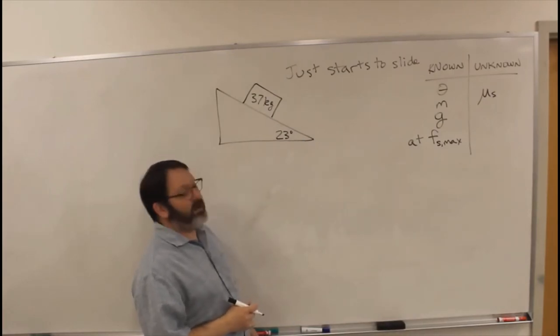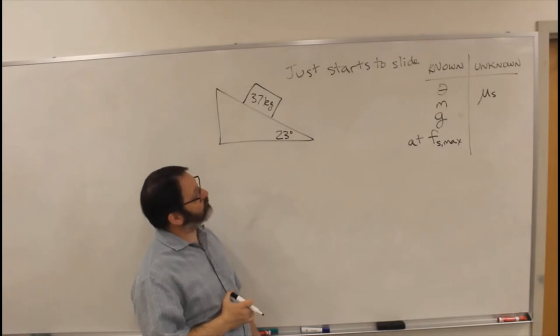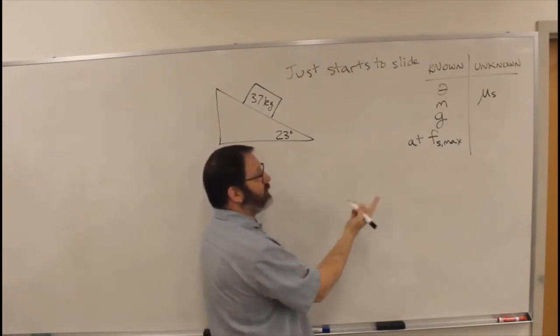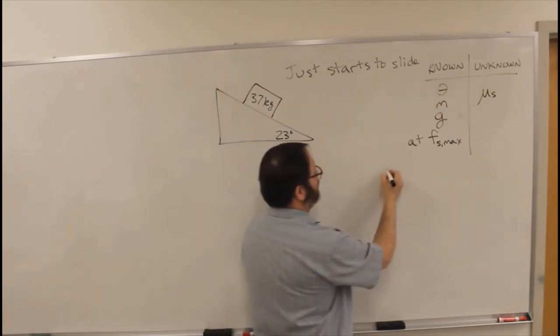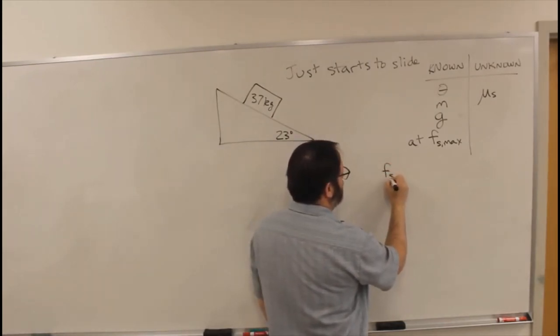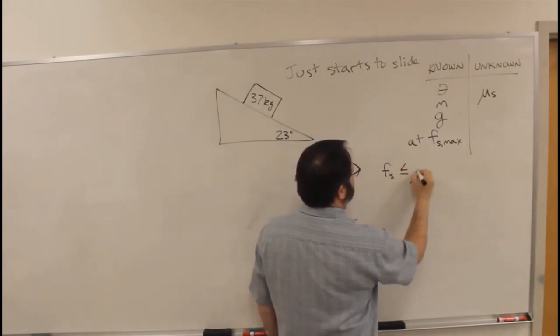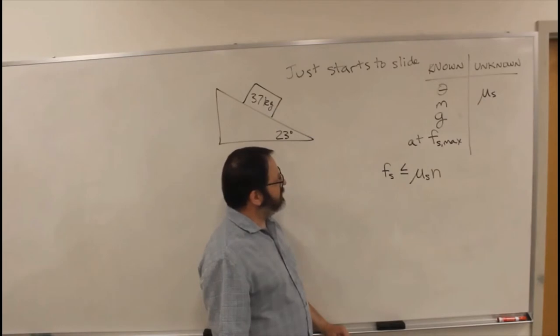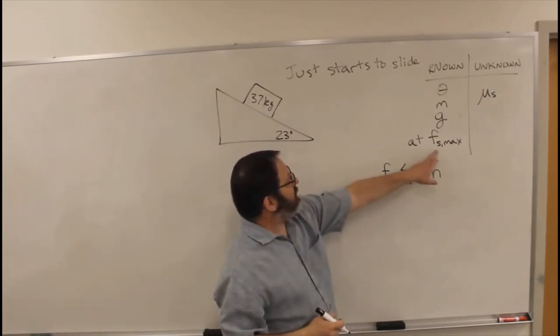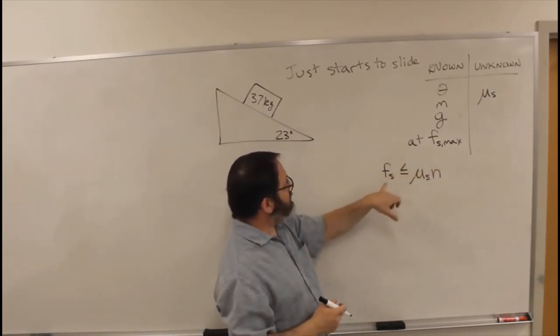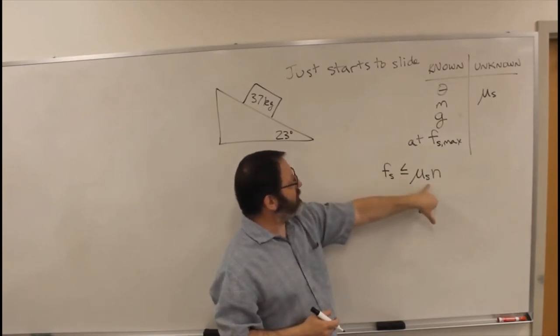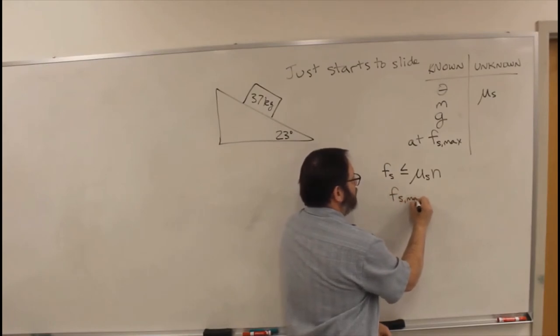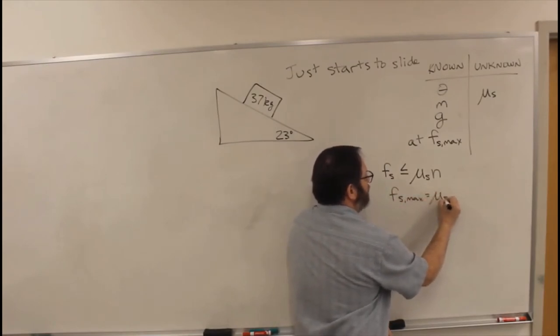All right, well, what should we use? Fs max, we're looking for mu s. The only equation we have that's got mu s in it is that Fs is less than or equal to mu s times n. So we've got static friction here. Fs max, that's when Fs is equal to this. So we know Fs max is mu s n.